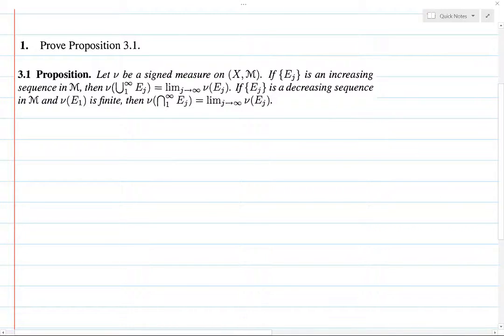Alright, so this is the first problem in this section. Nu is a signed measure, and if we have an increasing sequence in our sigma algebra, then nu of the union of the sets is equal to the limit of the measures of the sets individually. Conversely, if we've got a decreasing sequence and the measure of the first sequence is finite, then the measure of the intersection is equal to the limit of the measures. This is basically just like inner and outer regularity for positive measures, but of course here we've got signed measures. So the proof is going to be very similar.